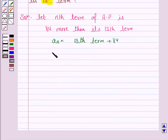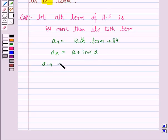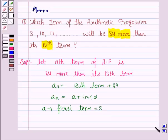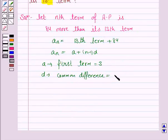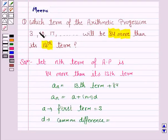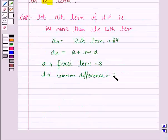The nth term of an AP is given by the formula a plus (n minus 1) into d, where a is the first term. Here, a in this arithmetic progression is 3, and d is the common difference, which is equal to 7, since 10 minus 3 is 7 and 17 minus 10 is 7.